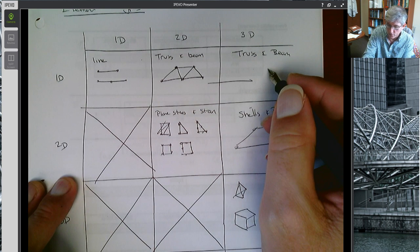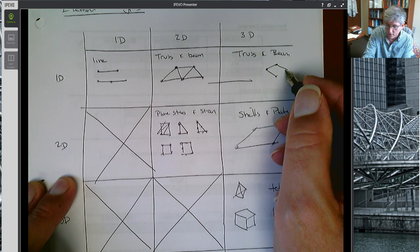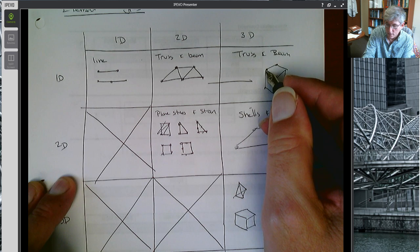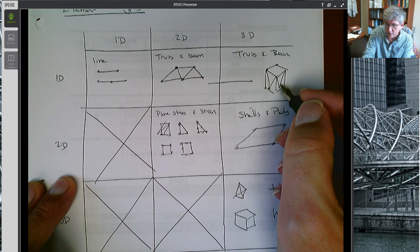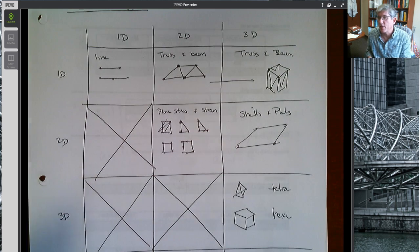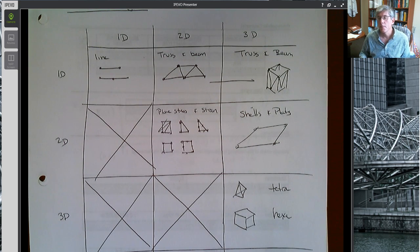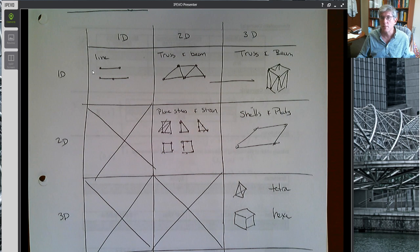A one-dimensional element in one-dimensional space is just a line element, like a bar element, spring element. A one-dimensional element in two dimensions is going to be a truss or a beam, and again in three dimensions it's going to be like a truss or a beam structure. We also have two-dimensional elements. Obviously you can't have a two-dimensional element in one-dimensional space, but in 2D space it's going to be plane stress or plane strain. In three dimensions this will be a plate or a shell. We can have three-dimensional elements that can only exist in three-dimensional space: tetrahedra or hexahedra, sometimes pentahedra elements.